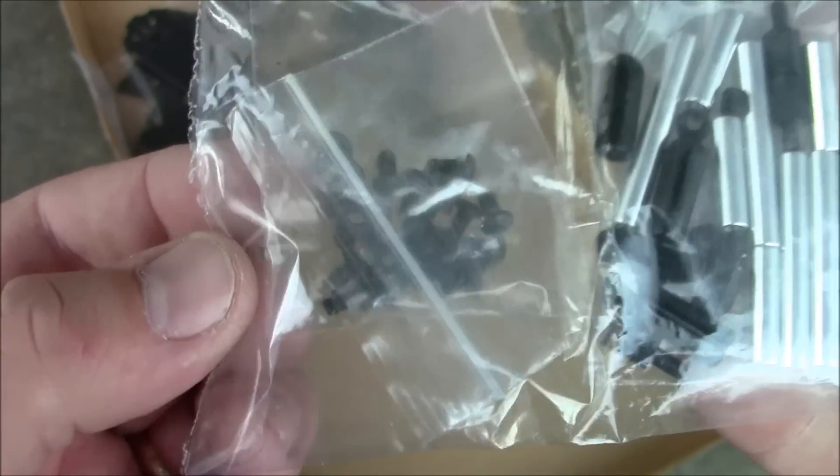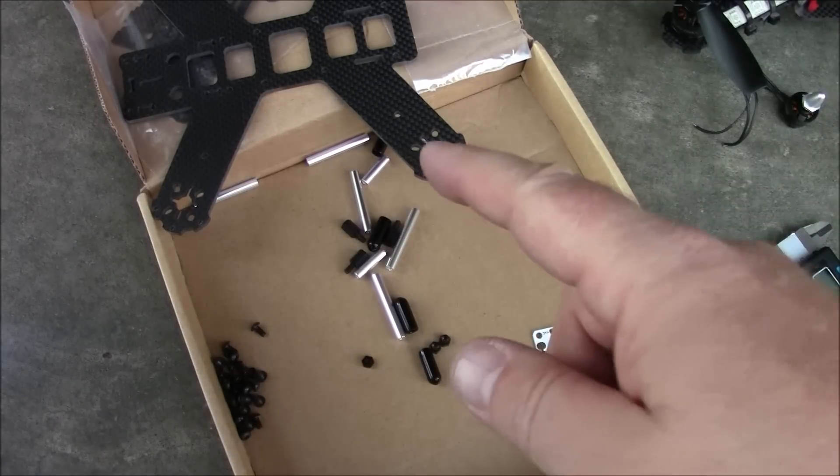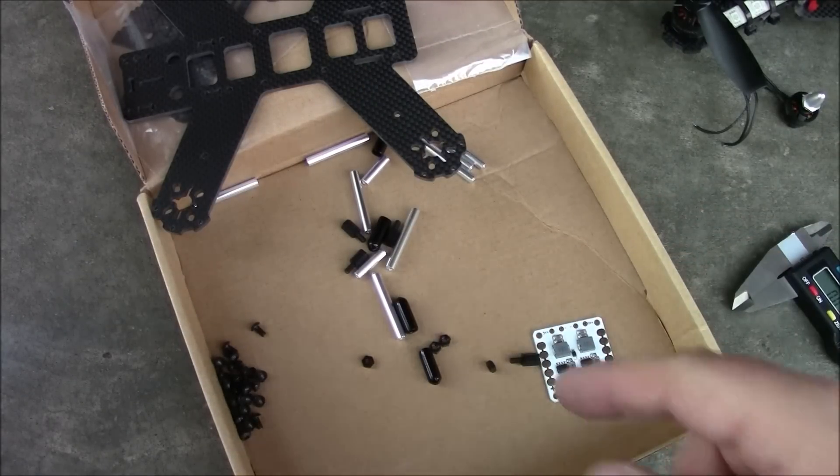Spacers and the nylon screws. I said they were nylon screws, they're actually metal screws. These look like they're all the same parts as the LS210 just in a smaller form factor.